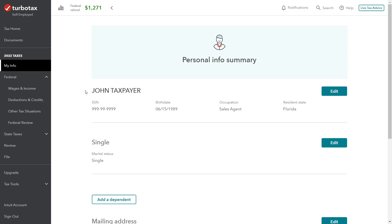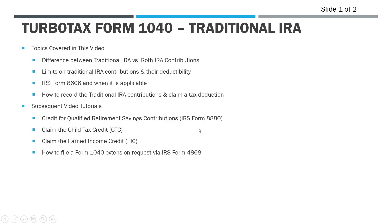We are continuing with the John Taxpayer example in TurboTax, the self-employed version. For this video we're going to cover how to enter the traditional IRA contributions that John's going to make for the year and what the income and deduction issues are that apply. We'll talk about the differences between the traditional IRA and the Roth, the limits on how much we can put into these retirement accounts, the deductibility, Form 8606 and when that applies, and how to actually record the contribution into TurboTax and where we'll see the tax deduction on the return.